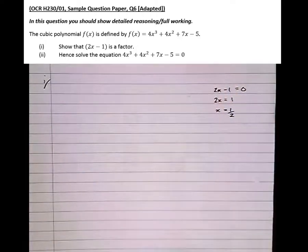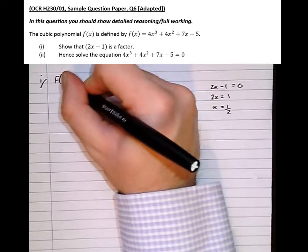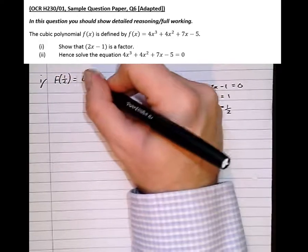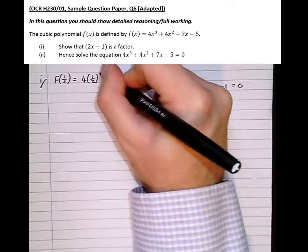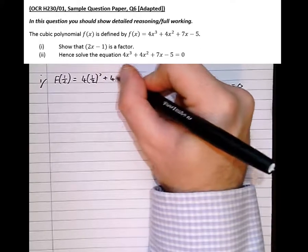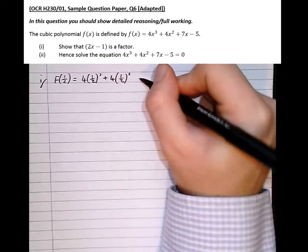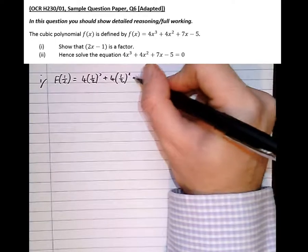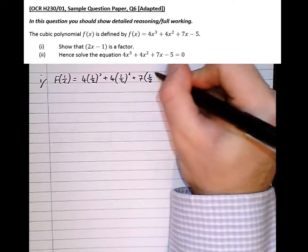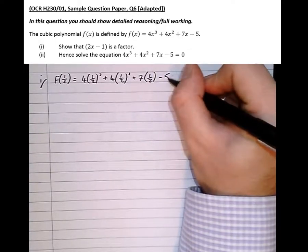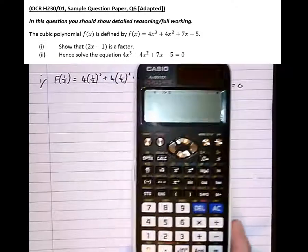There we go, that's what we need to sub in to show that it's a factor. So f of 1 half equals 4 times 1 half cubed plus 4 lots of 1 half squared plus 7 lots of 1 half take 5, and we put that in the calculator.